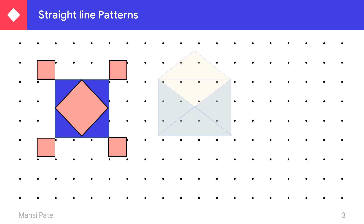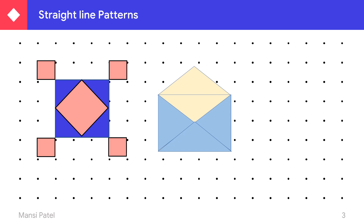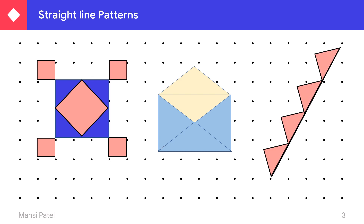The second one is the letter box — it's one type of letter. And the third one is also a straight line pattern. These all are the examples of straight line patterns.